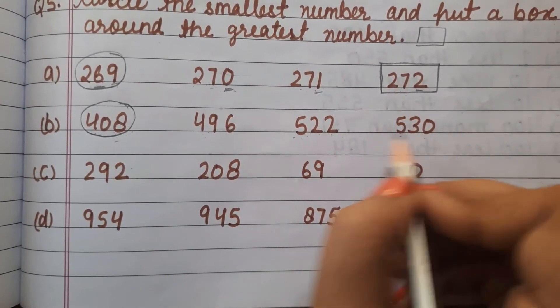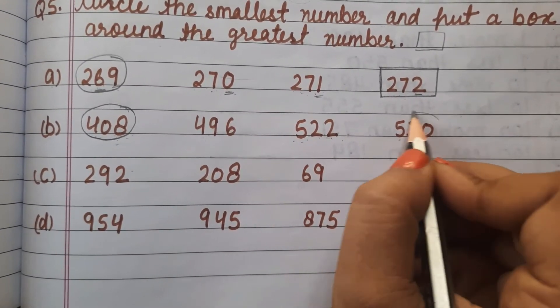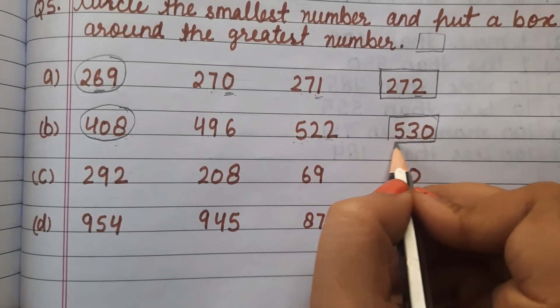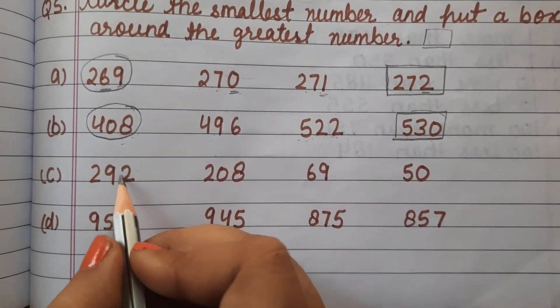Between 522 and 530, which is bigger? 530, because after 22 comes 30 in counting.